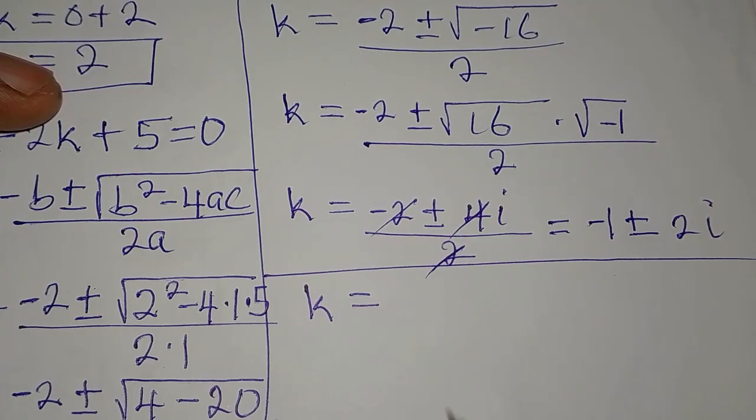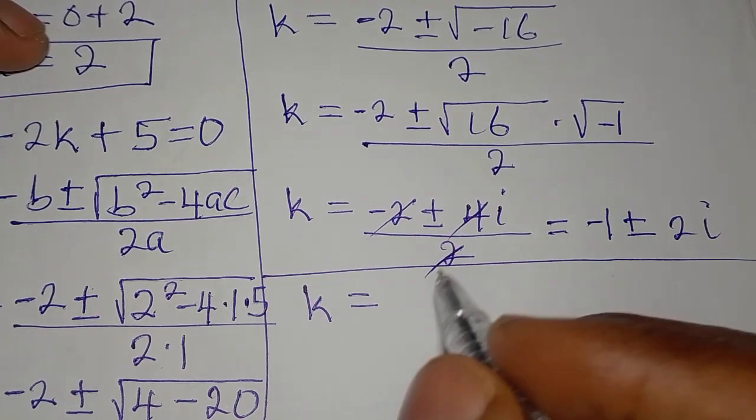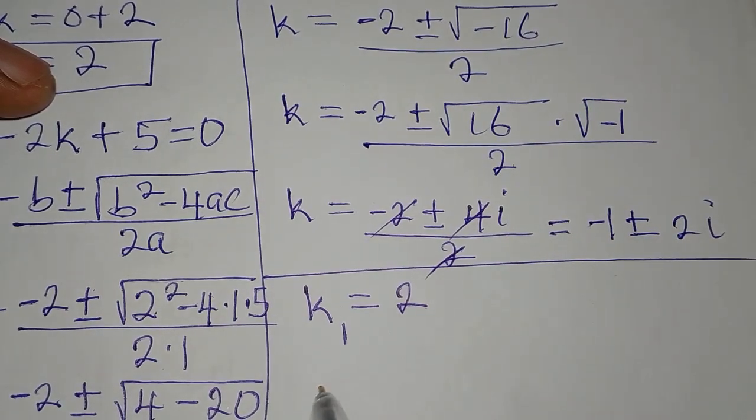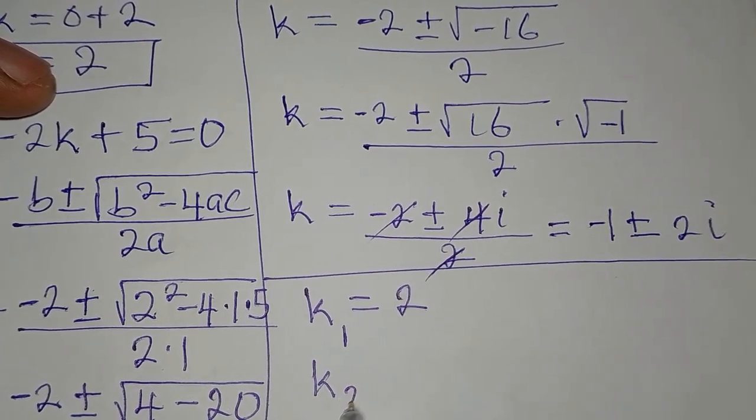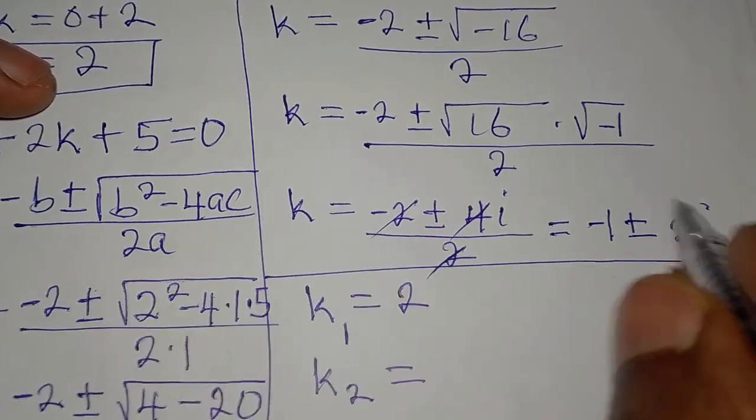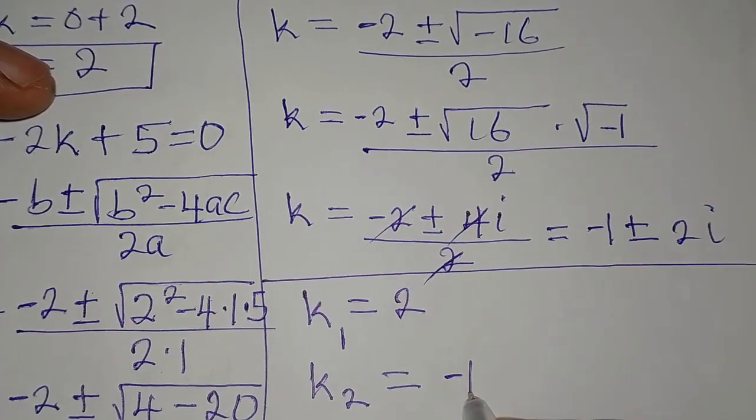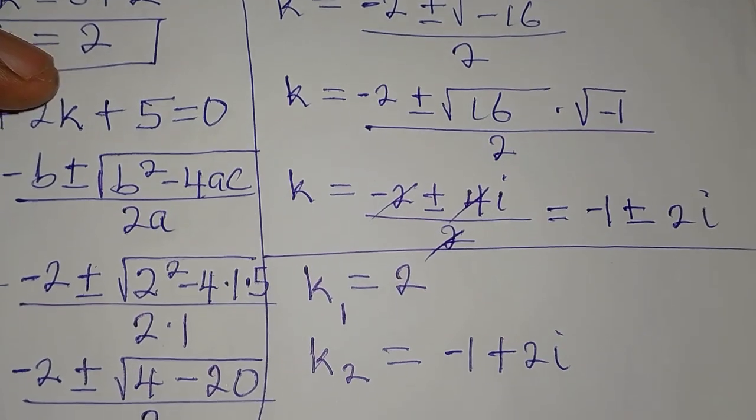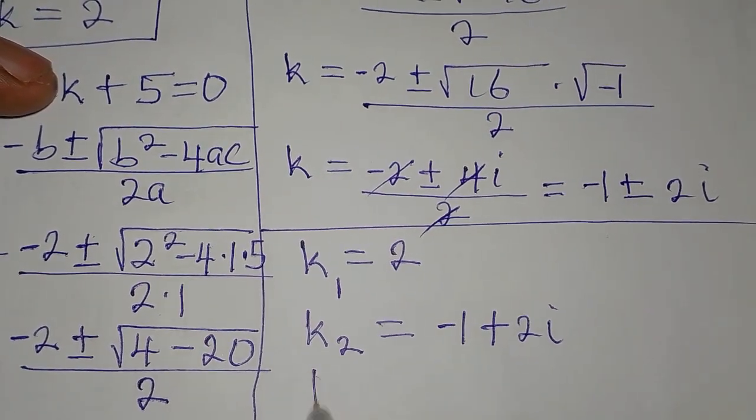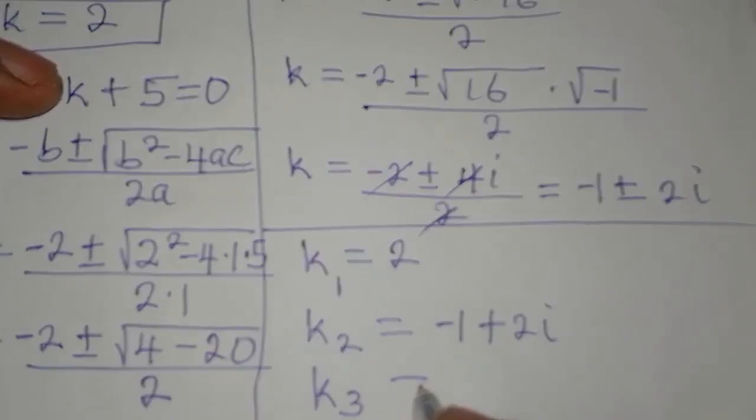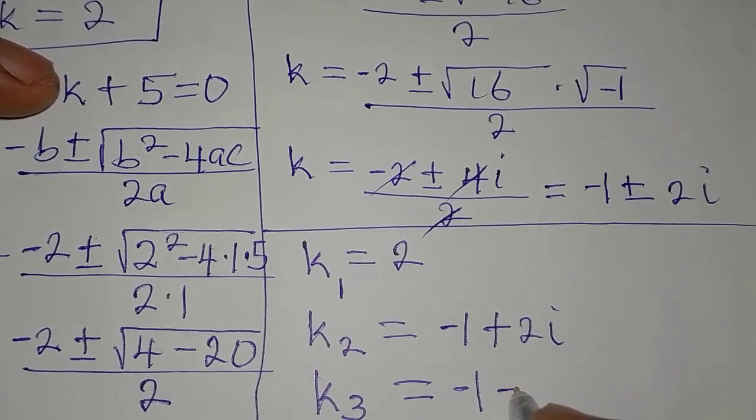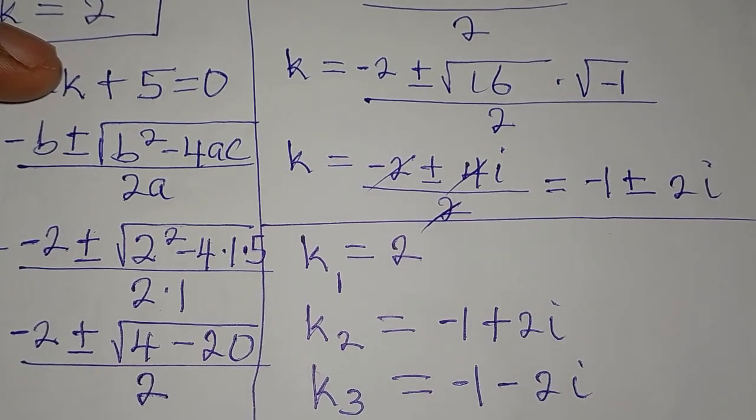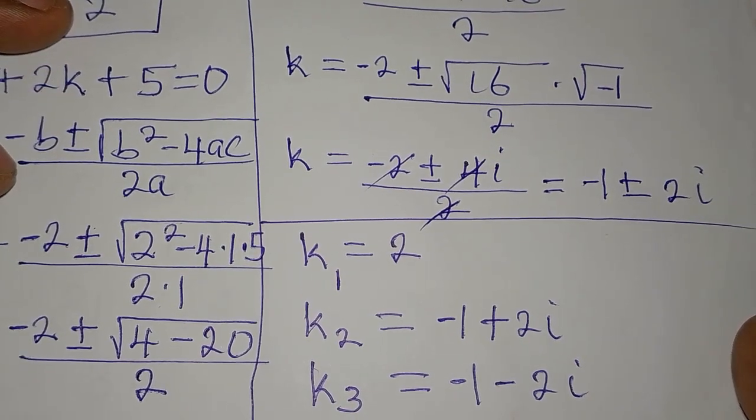Let's get the three solutions. Before now, we got k to be equal to 2. Let's call that k1. Then, k2, the second solution, is from here. Minus 1 plus 2i. This is our second solution. Then, the third solution, k3, is equal to minus 1 minus 2i. So, these are the three solutions to the equation.